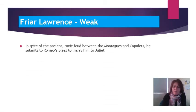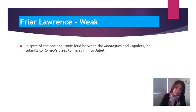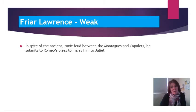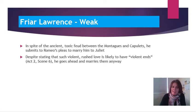Now I'm going to look at Friar Lawrence and the word I've chosen to sum him up with is weak. Weak because despite being fully aware of the enmity between the two households, he submits to Romeo's pleas to marry him to Juliet — and this is despite the fact that he is already questioning whether Romeo's love is genuine, suggesting Romeo may only be looking with his eyes. Despite the ancient grudge and the toxic feud between the families, and despite stating that such violent love is likely to have violent ends in Act 2 Scene 6, he gives in and marries them anyway.